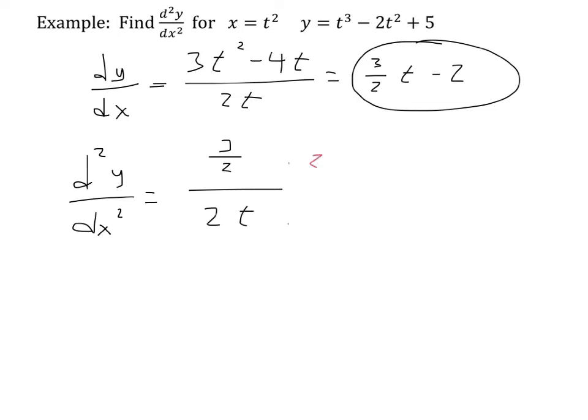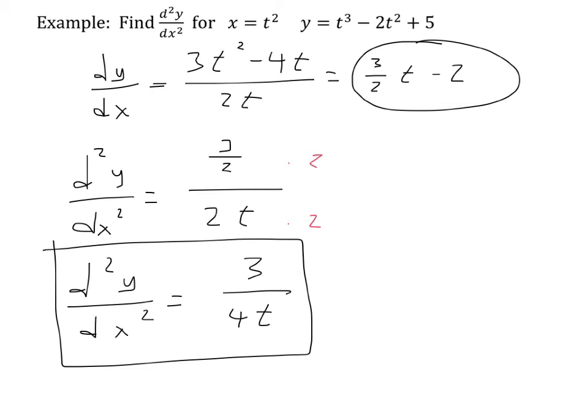This is a little bit of a mess. I'll multiply top and bottom both by 2. That'll get me d squared y dx squared is 3 over 4t, and this is my second derivative of y with respect to x.